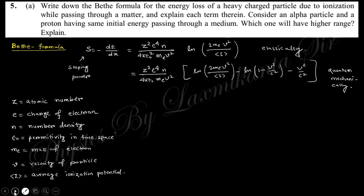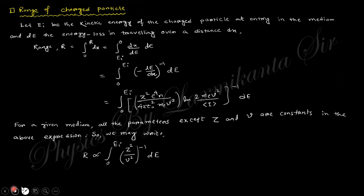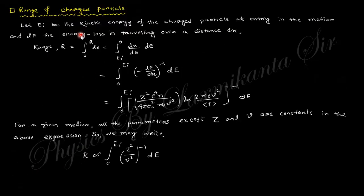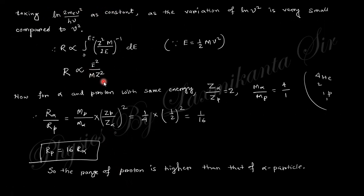The next part considers an alpha particle and a proton having the same energy and asks which has the higher range. Using the range expression and substituting the respective values of Z and mass for a proton and an alpha particle, comparing the two expressions shows that the range of the proton is higher than that of the alpha particle.